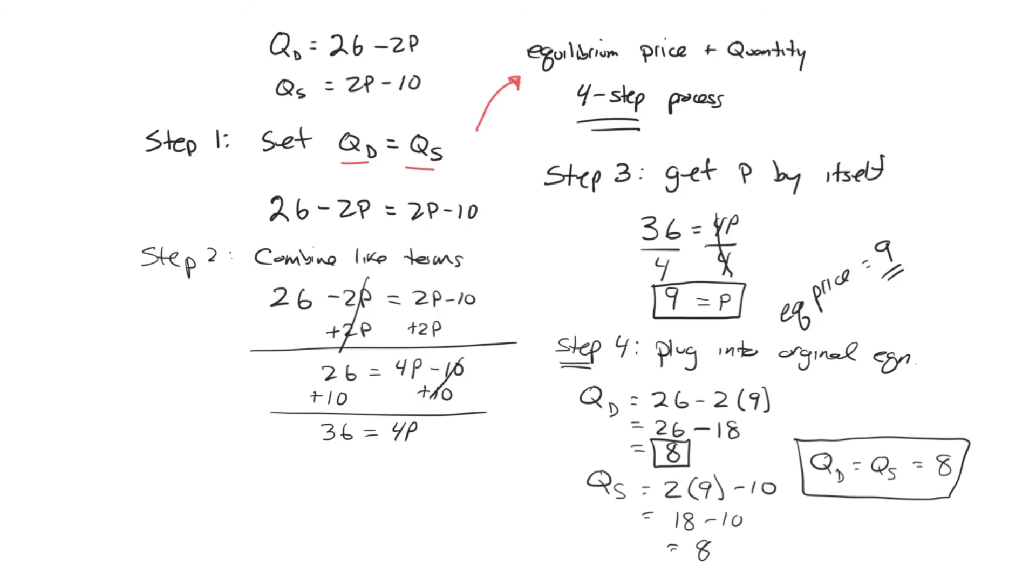So there you have it. Given these two equations up here, quantity demanded equals 26 minus 2P and quantity supplied equals 2P minus 10, we can go through a four-step process to make sure that we find the equilibrium price that leads to an equilibrium quantity, where quantity demanded equals quantity supplied.